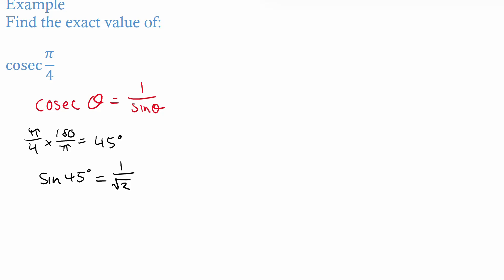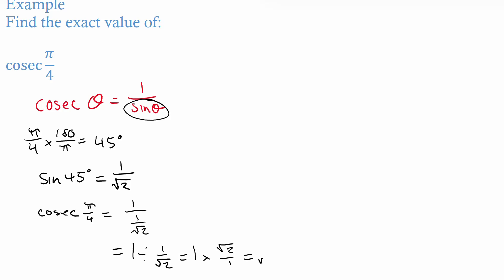Now that I know sine 45 is 1 over root 2, I know that cosec(π/4) is going to be the same as 1 over (1 over root 2). We said cosec θ = 1/sin θ, and sin θ = 1/root 2, so cosec(π/4) = 1 ÷ (1/root 2). We don't like to divide by fractions, so we flip it to get the reciprocal — root 2 over 1 — and change divide to multiply. So 1 times root 2 is just root 2.